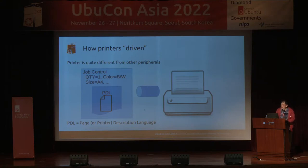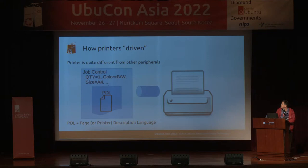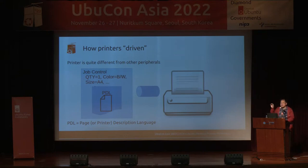The printer has a queue. It gets input data from the PC — for example, job control commands like quantity equals one, color is black and white, size equals A4. Inside this job control there is a PDL — a Page Description Language — which describes the page content: text is here, a line is here, a circle is here, and so on.